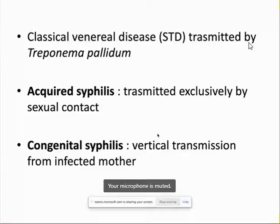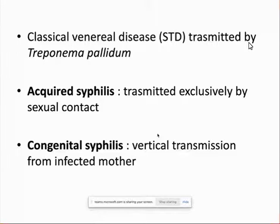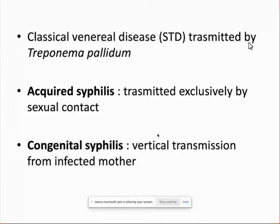Acquired syphilis is transmitted exclusively by sexual contact — that is why it is classically a venereal or sexually transmitted disease. However, vertical transmission from an infected mother to the fetus growing inside the womb is also possible, which may lead to congenital syphilis. Based on the mode of transmission, syphilis can be classified as acquired or congenital.